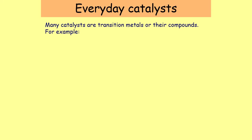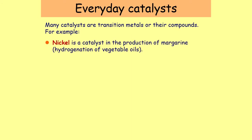Catalysts are used in everyday situations. Many catalysts are transition metals — that's the middle part of the periodic table — or compounds made from transition metals. Nickel, for example, is used to turn vegetable oils into margarine. That reaction is called hydrogenation because you're adding atoms of hydrogen into the oil, which makes it turn into a solid that you can spread.